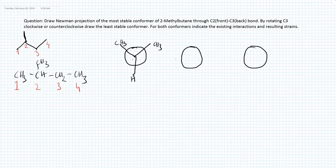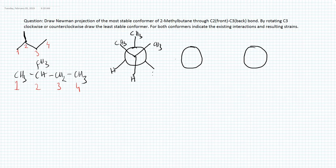Now we need to draw the Newman projection for a staggered conformer. From the back carbon C3, we have three groups: two hydrogens and one methyl group. I'm placing the methyl group at one position and hydrogens at the other two. Looking at this conformer, there is a methyl-methyl 60-degree dihedral angle between the methyl groups on C2 and C3, which is a gauche interaction.